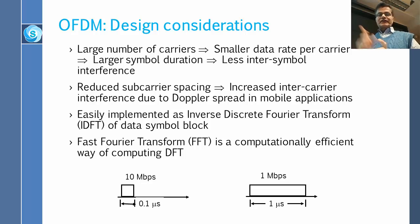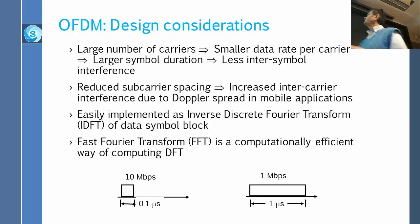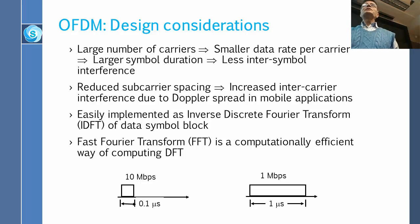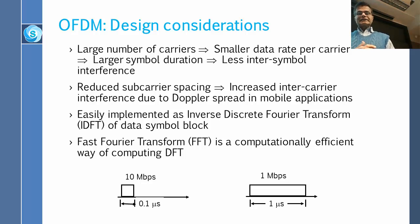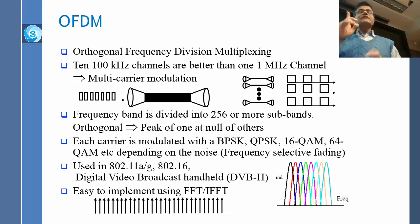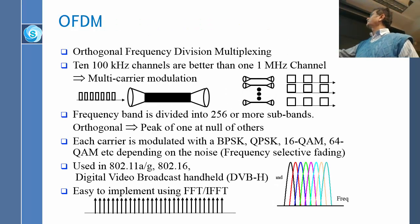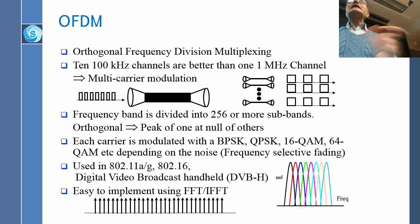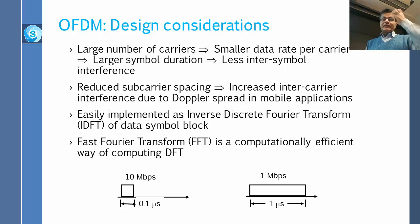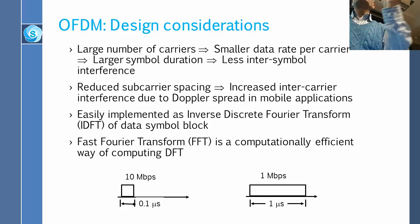Reduced subcarrier spacing leads to less inter-symbol interference — that is, bits running into each other. The bits become bigger and bigger as they propagate and run into each other, affecting each other. The second issue is inter-carrier interference: if one carrier puts a lot of power into the center area of an adjacent carrier, the neighboring carrier will be affected. Inter-carrier interference also arises due to Doppler spread — the carrier was at one frequency but due to motion appears at a different frequency.